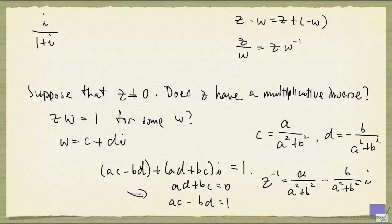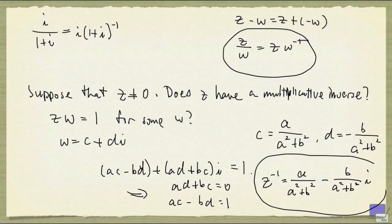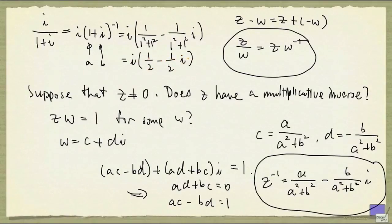Let's look at an example. So I want to divide i by 1 plus i. As mentioned here, i divided by 1 plus i is simply i times the multiplicative inverse of 1 plus i. And now I can simply use this formula. And so the multiplicative inverse of 1 plus i is simply 1 over 1 squared plus 1 squared minus 1 over 1 squared plus 1 squared times i. And that will give me 1 over 2 minus 1 over 2 times i.